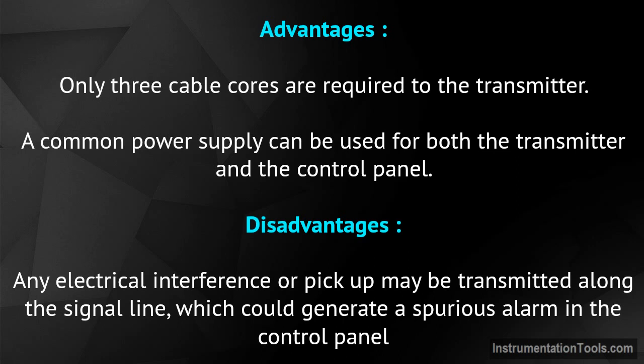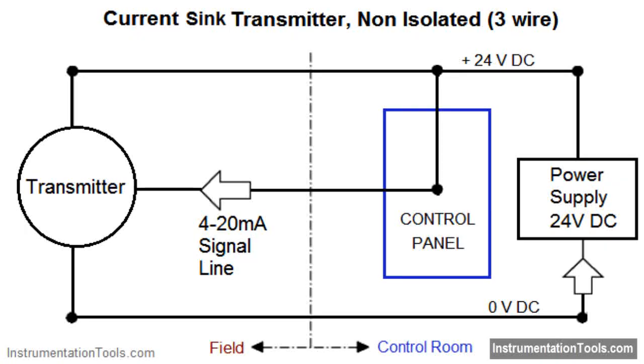A common power supply can be used for both the transmitter and the control panel. Disadvantages: any electrical interference or pickup may be transmitted along the signal line, which could generate a spurious alarm in the control panel.